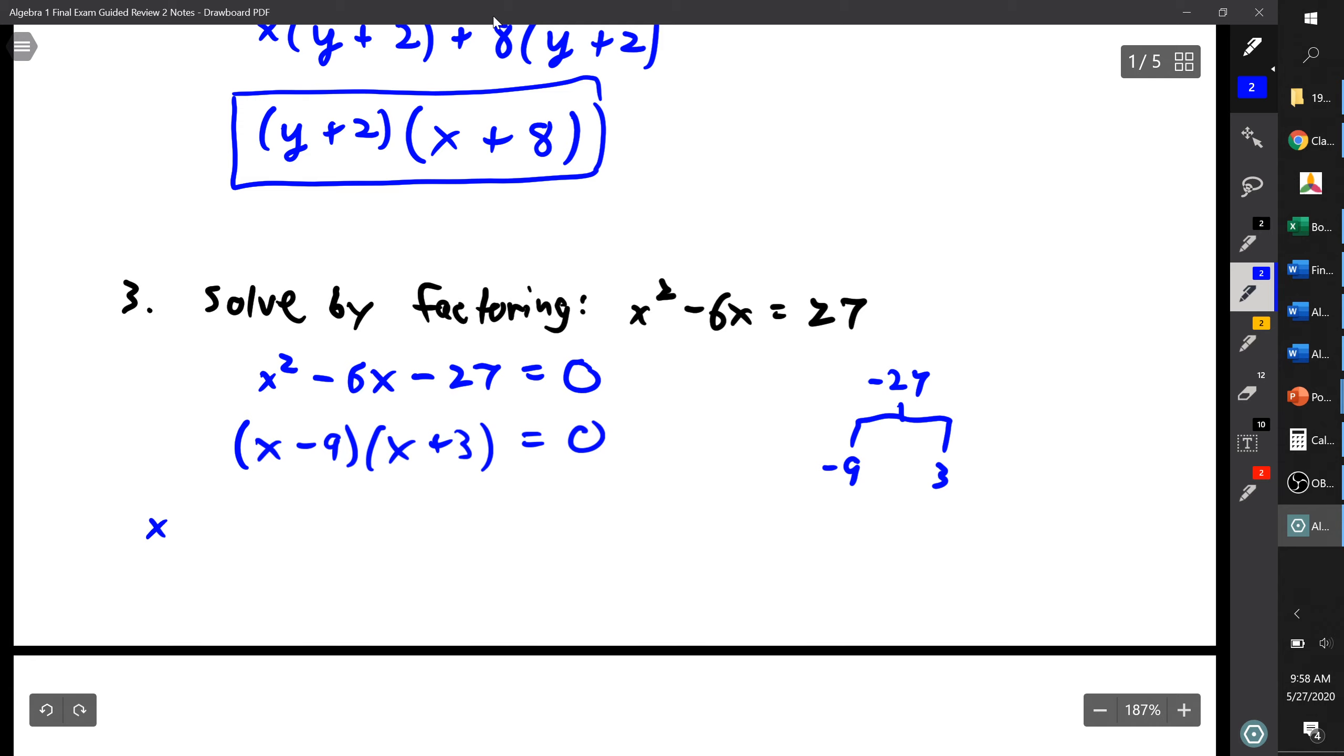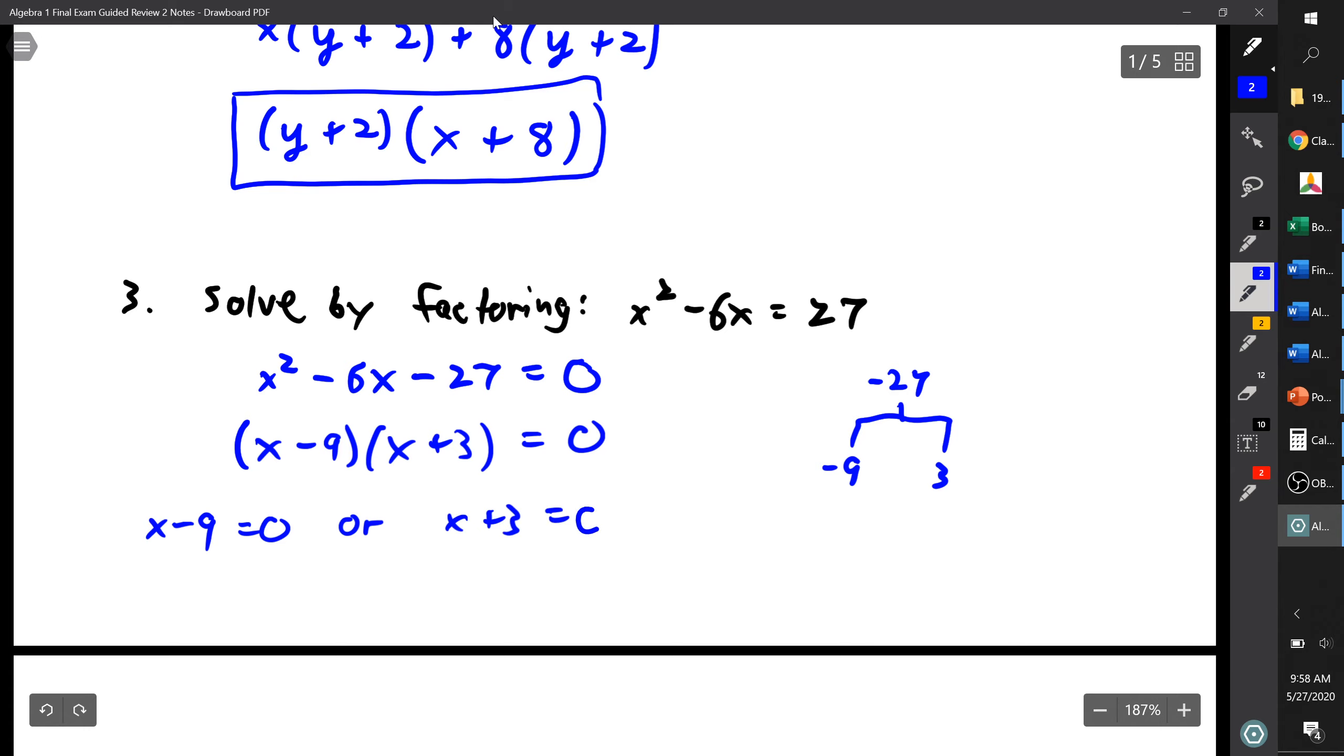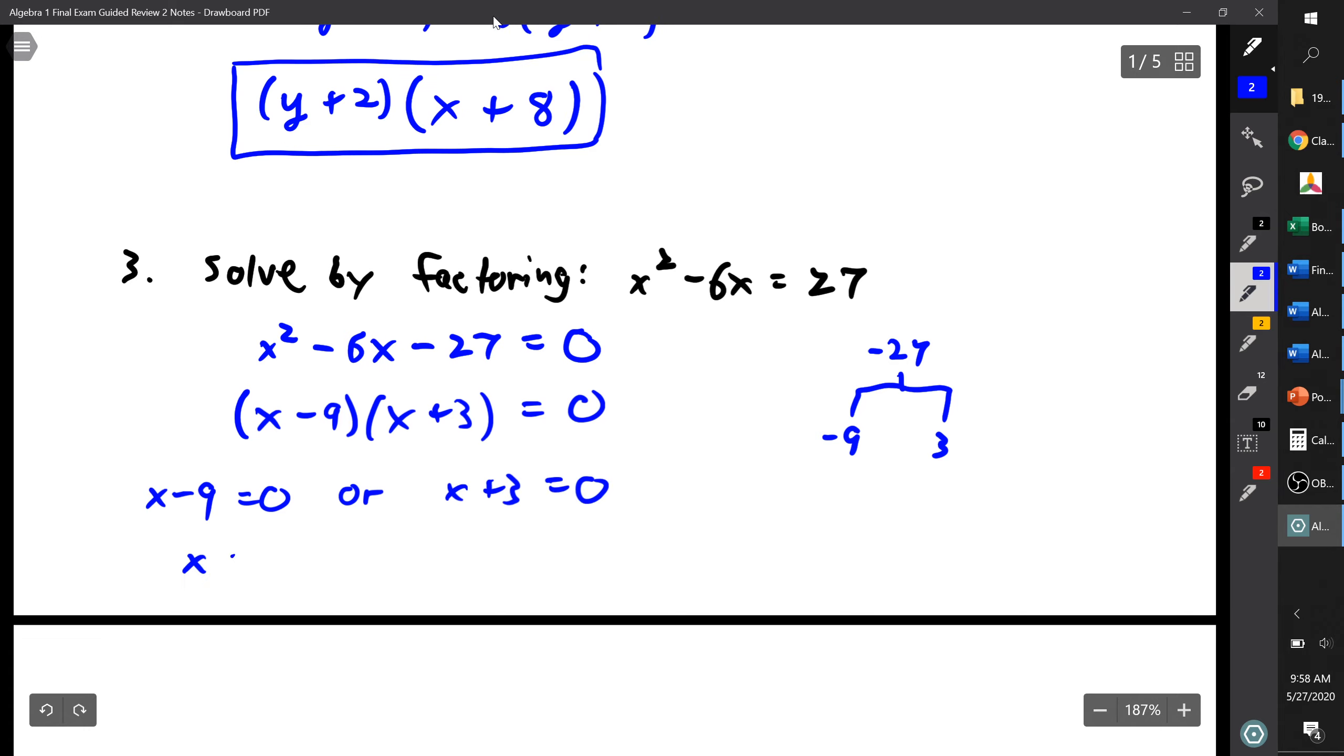Now I can take each factor and set it equal to 0. So I say x minus 9 equals 0, or x plus 3 equals 0. And this one, x equals 9, and this one, x equals negative 3.